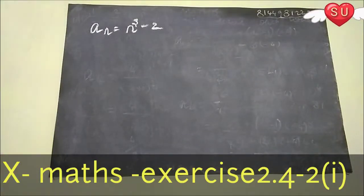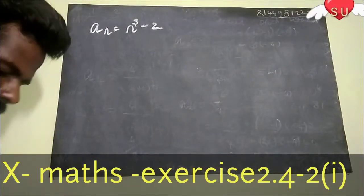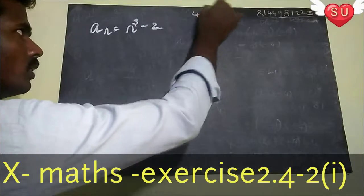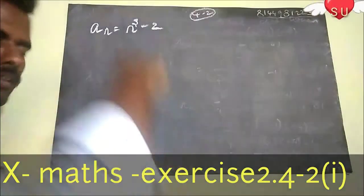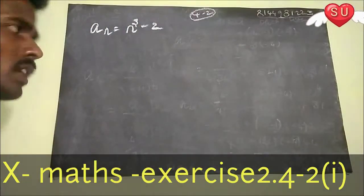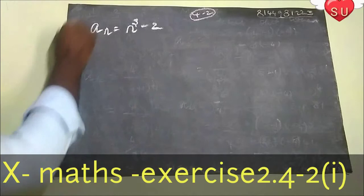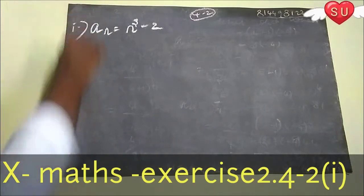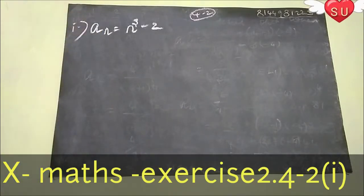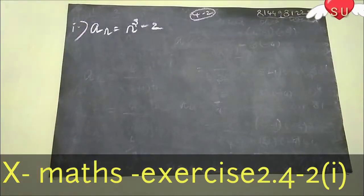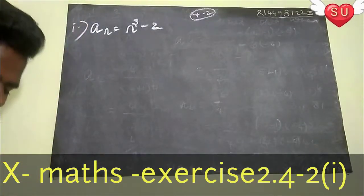Hi friends, welcome. This is exercise 4.2, second law, first sum. The first sum: given A^N = N³ - 2, find the first 4 terms.